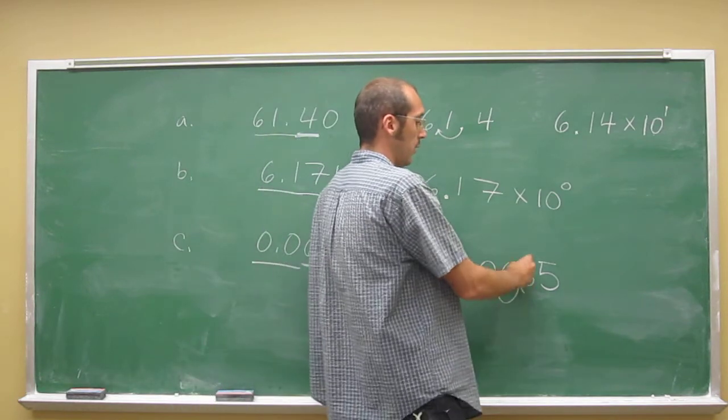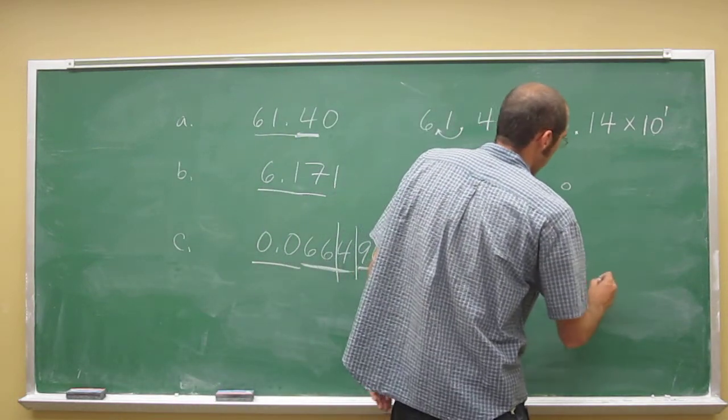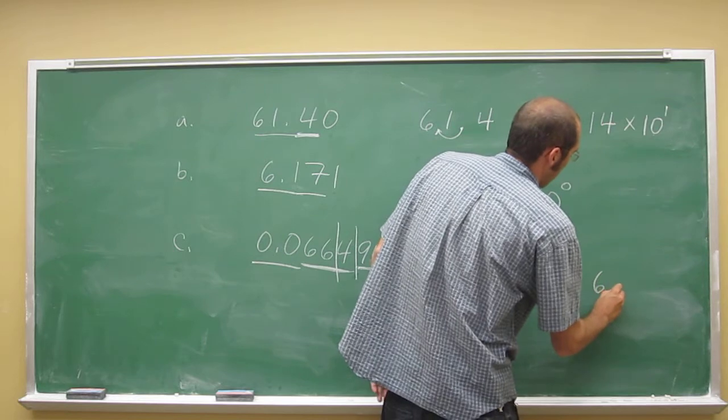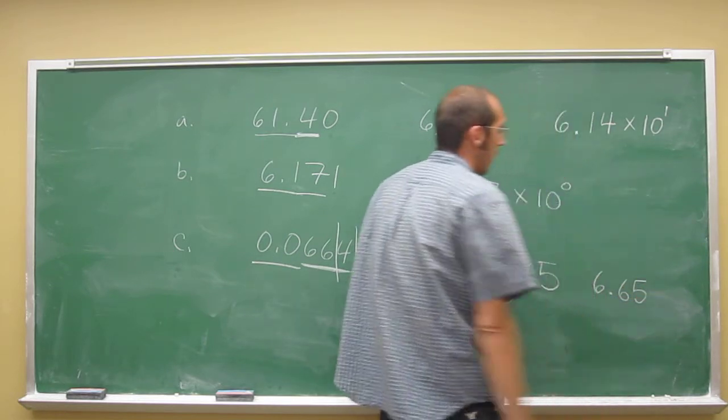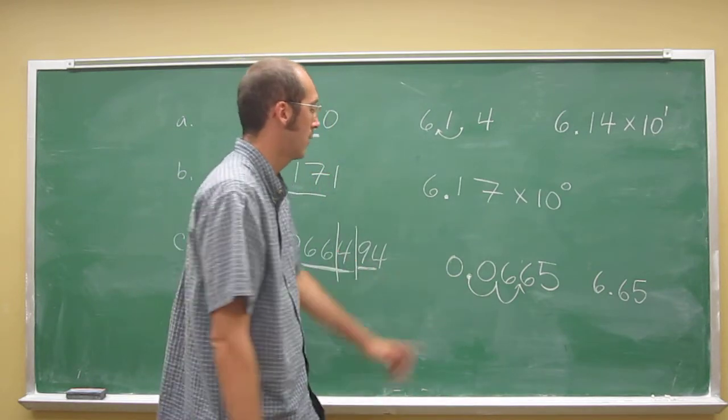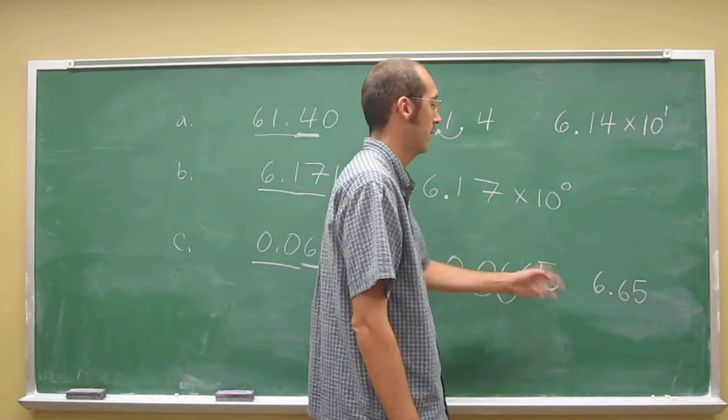And we're moving it two places. So it's going to be 6.65, like that. That's not the same as 0.0665, so we've got to multiply that by 10 to the something.